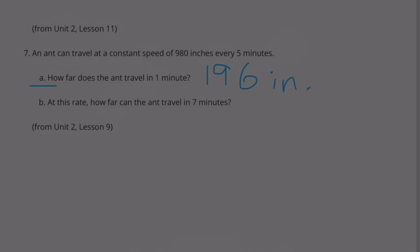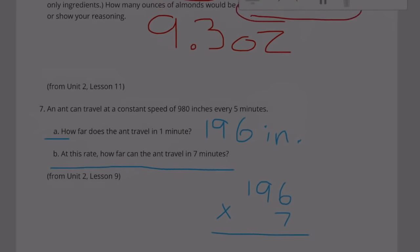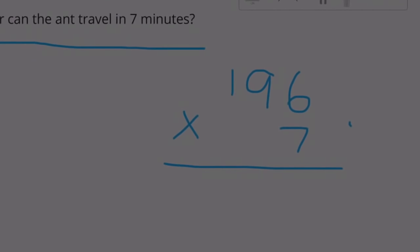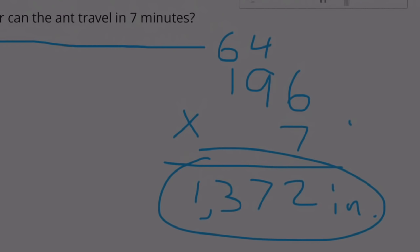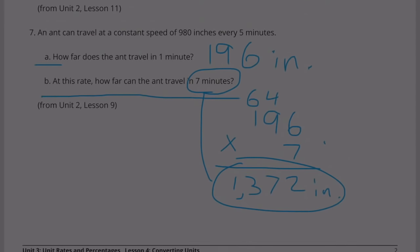Part B: At this rate, how far can it travel in 7 minutes? 1,372 inches in 7 minutes. The ant can travel 1,372 inches in 7 minutes.